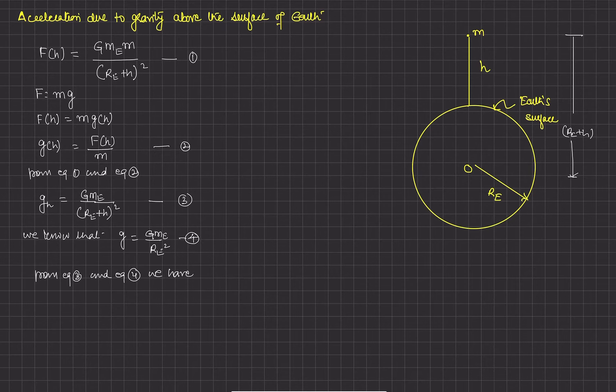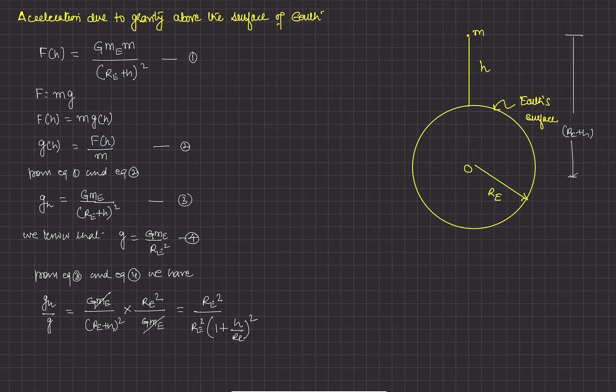So from equation number three and equation number four we have: g_h upon g equals (G M_e upon (r_e plus h) squared) times (r_e squared upon G M_e). After cancellation, we are left with r_e squared upon (r_e plus h) squared, which equals r_e squared upon r_e squared times (1 plus h upon r_e) squared.